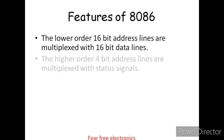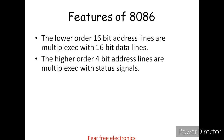The higher-order 4-bit address lines — that is A16 to A19 — are multiplexed with status signals S3, S4, S5, and S6. These status signals will be discussed in later classes. The purpose of this multiplexing is to reduce the number of pins.